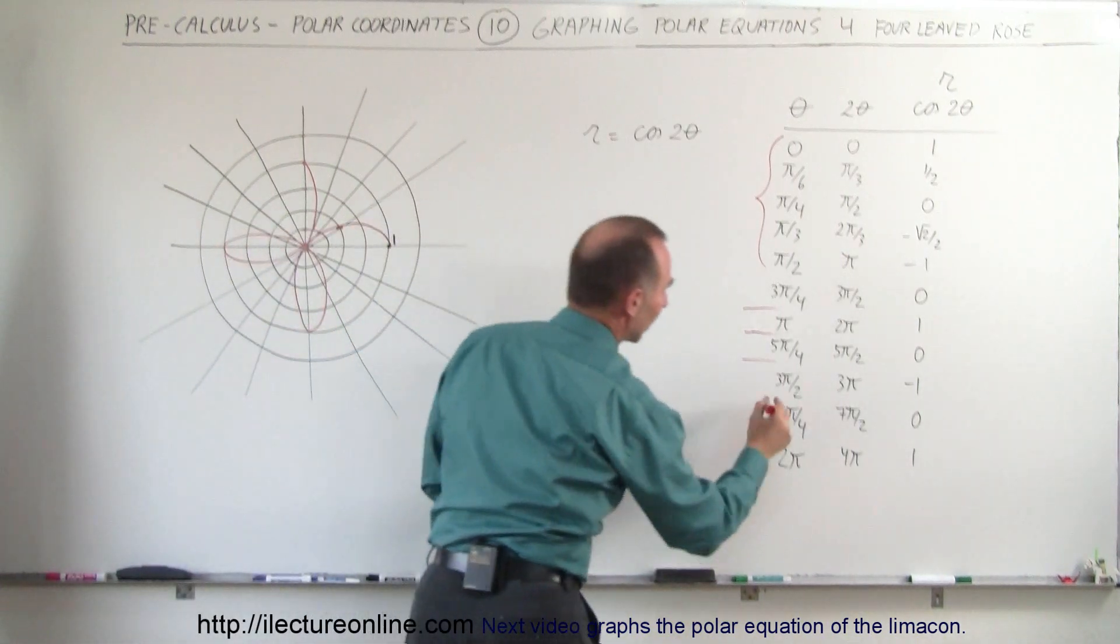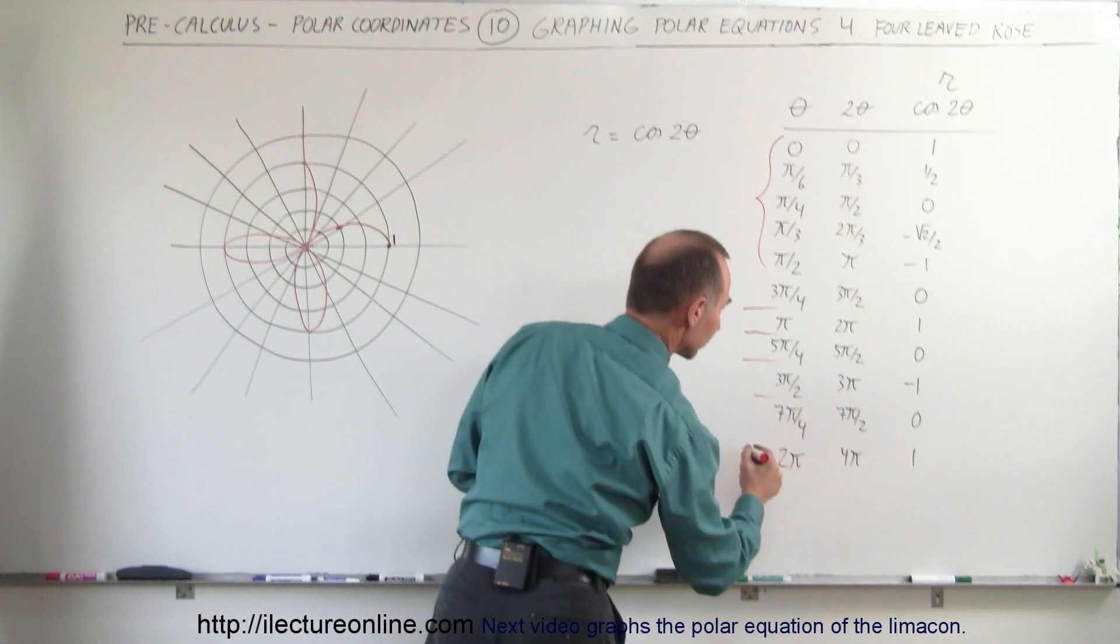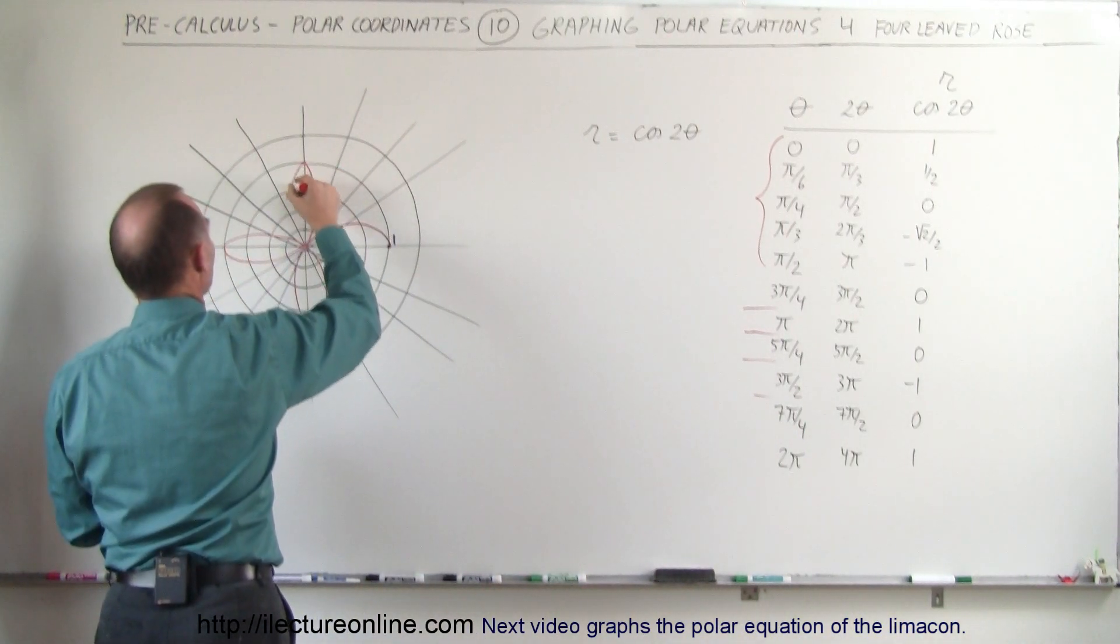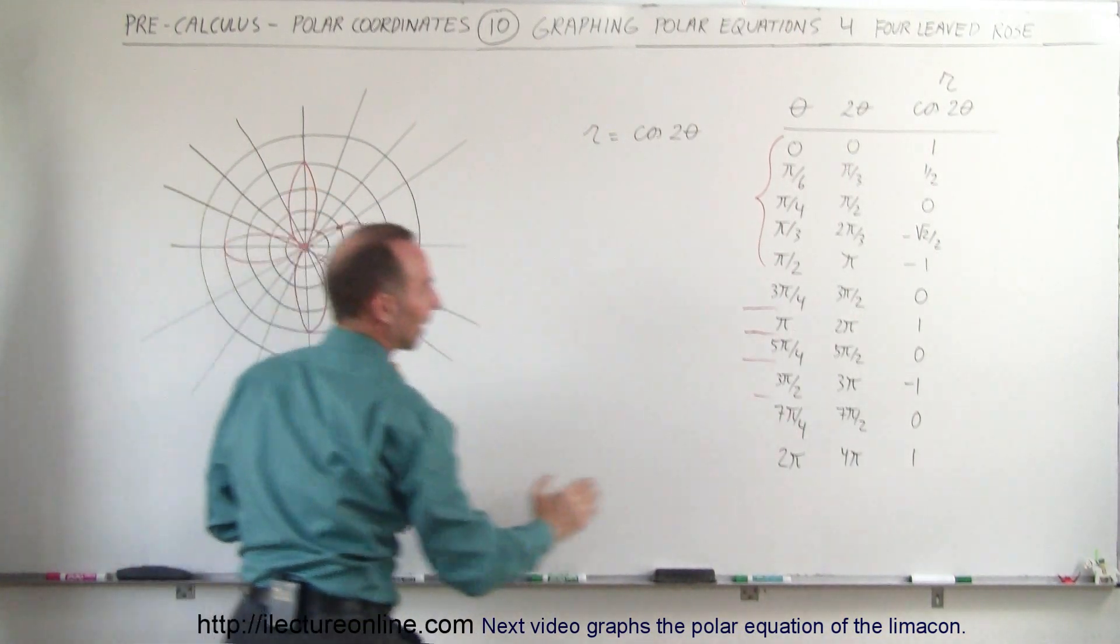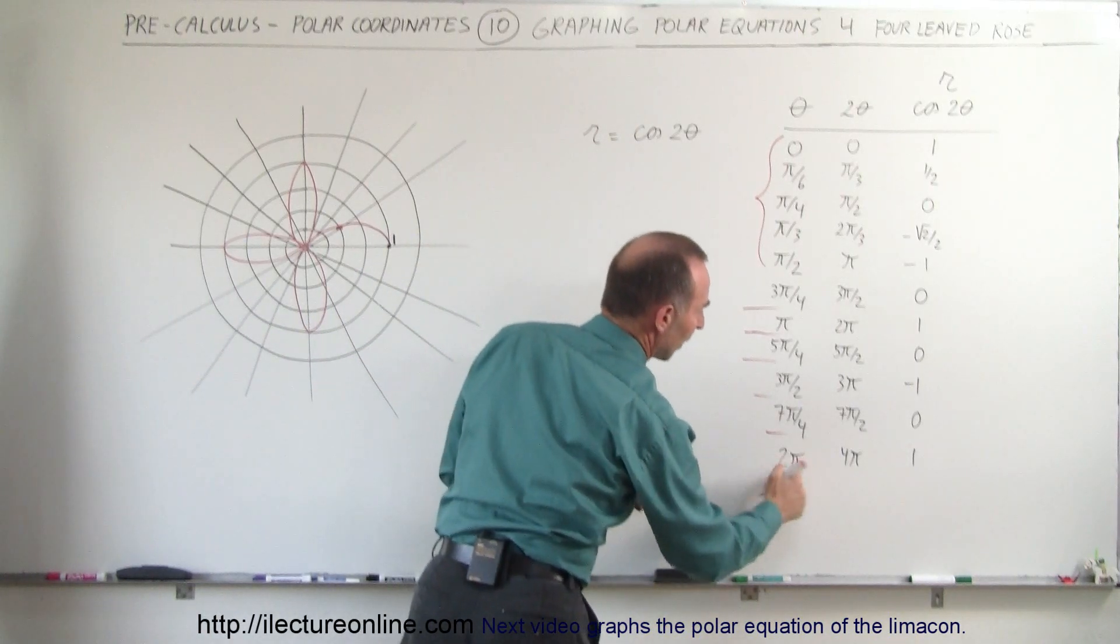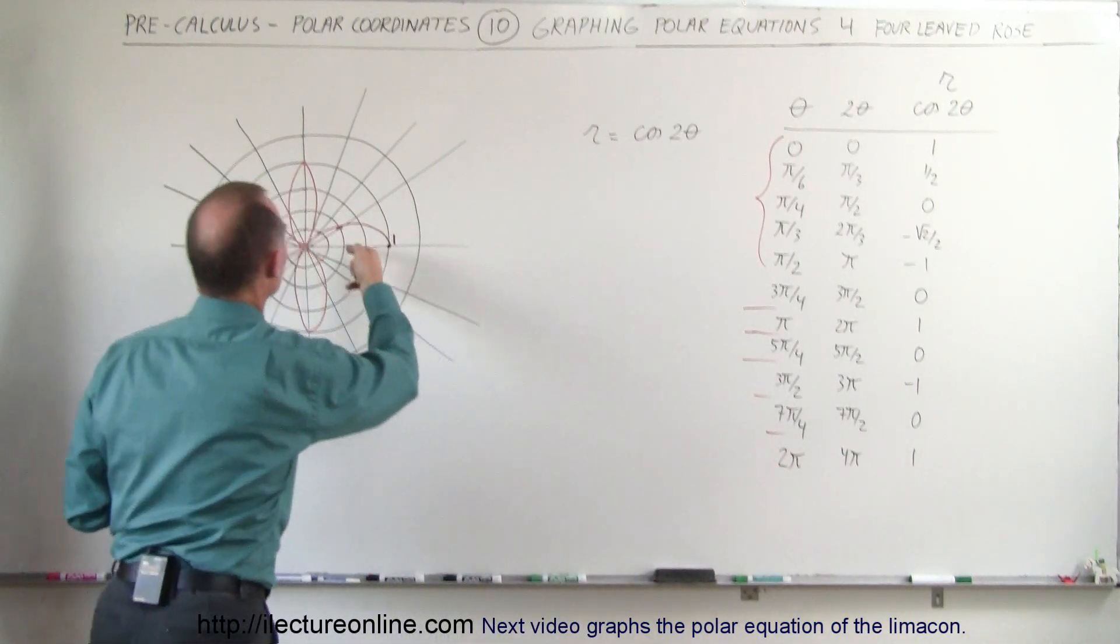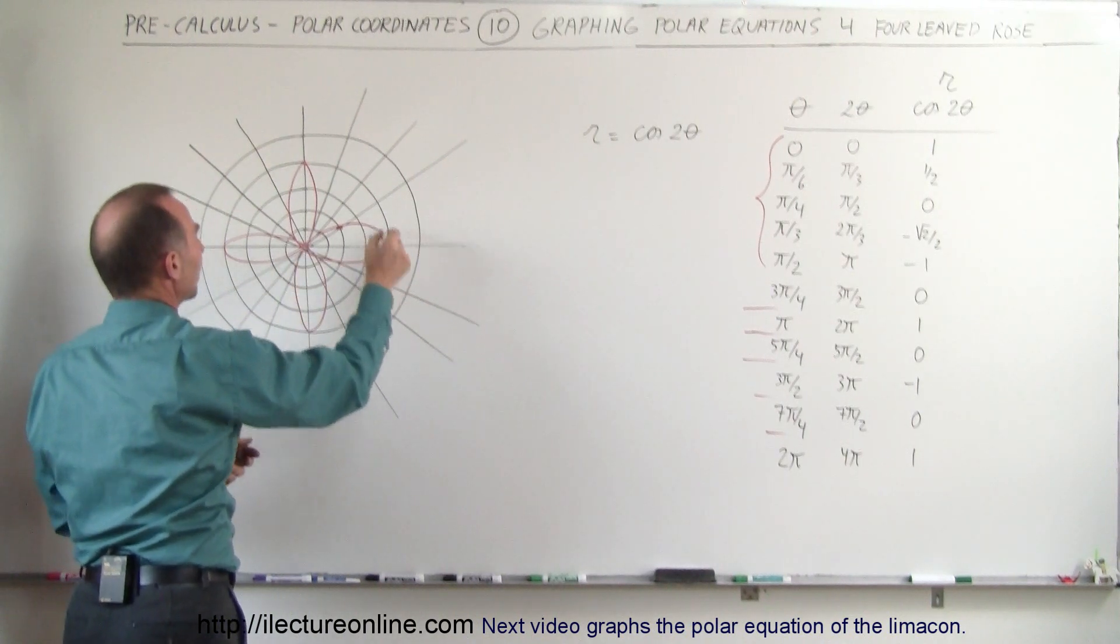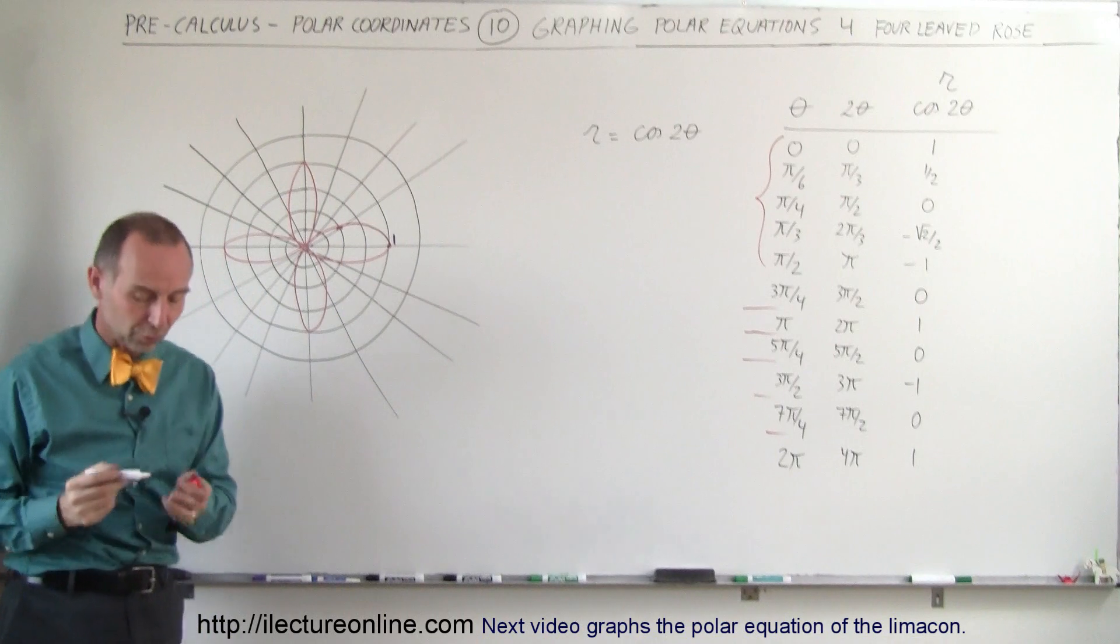And finally, when we come around at 7 pi over 4, it's back to 0. So that means we come back over this way. And finally, so now we're here and at 2 pi, we're back to 1. So when we come full circle like this, then the graph continues on like this, and we end up with what we call a 4 leaf rose.